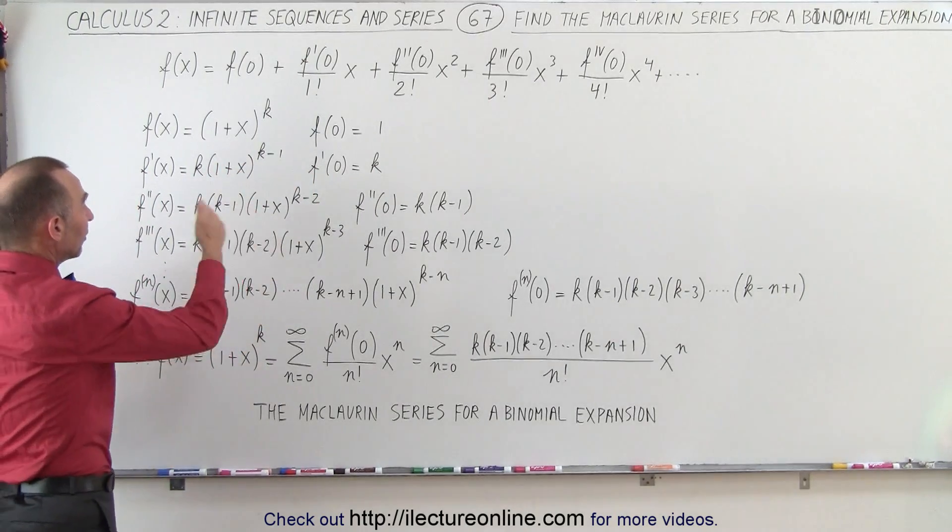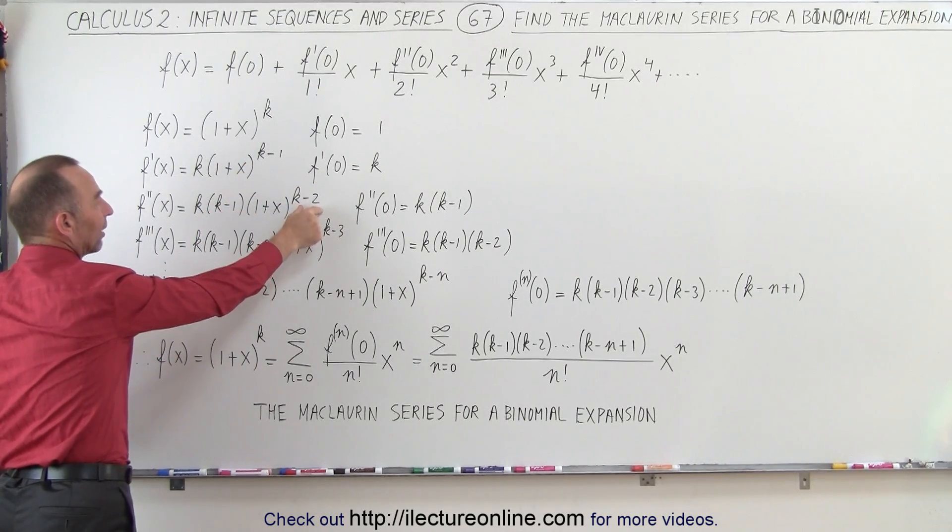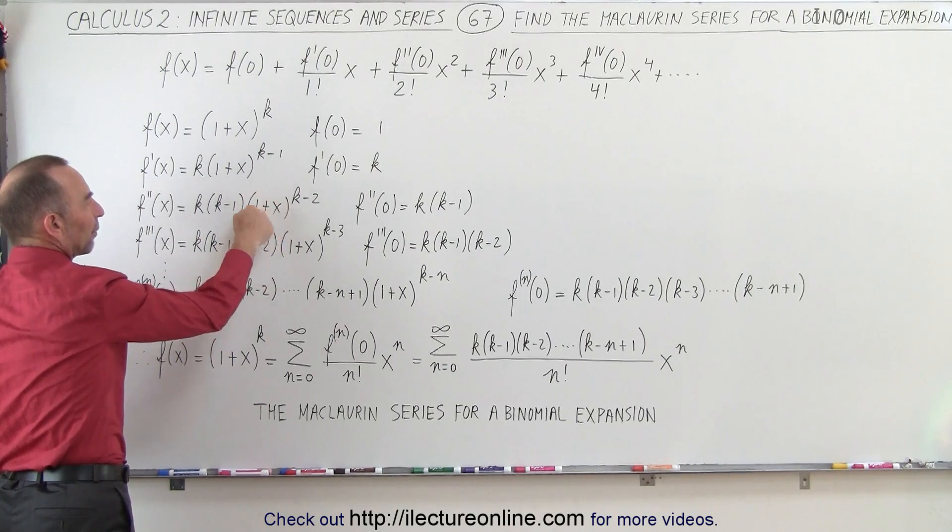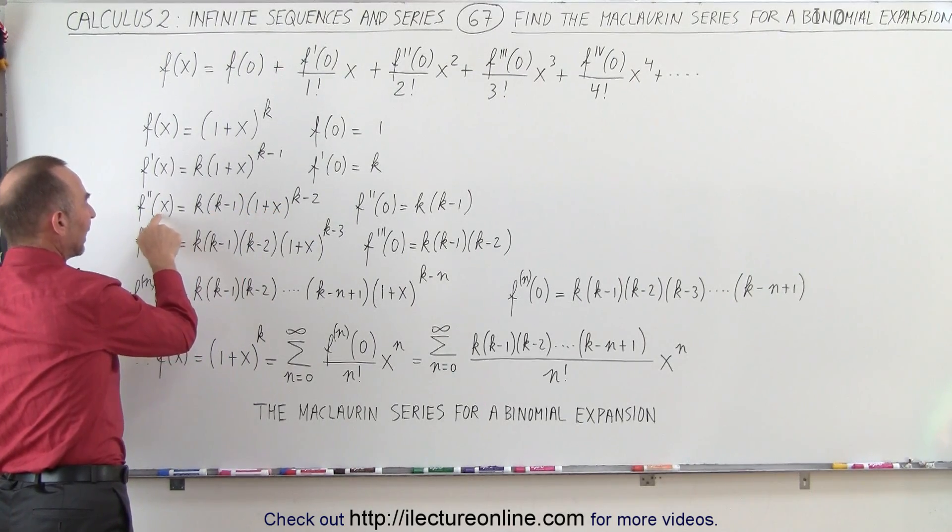Take the second derivative. You begin to see the pattern. We multiply by k minus 1. Now we have k minus 2, 1 less than the exponent, times the derivative of what's inside, which is still 1.